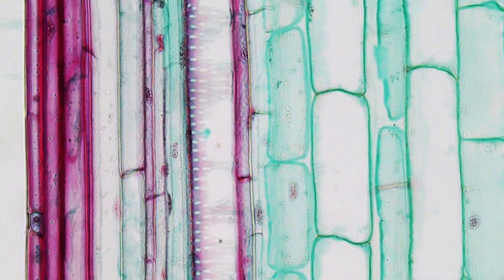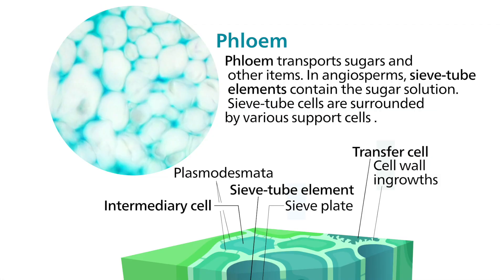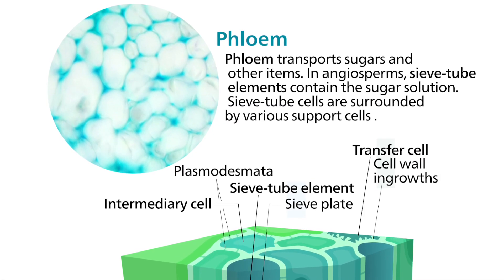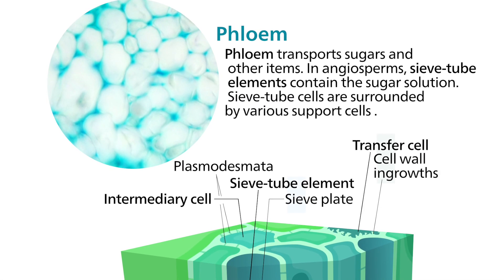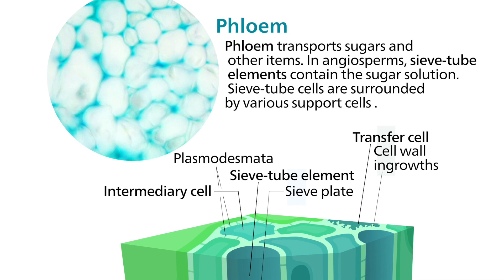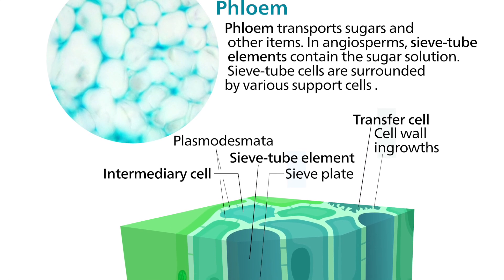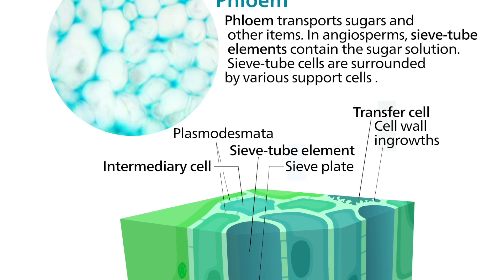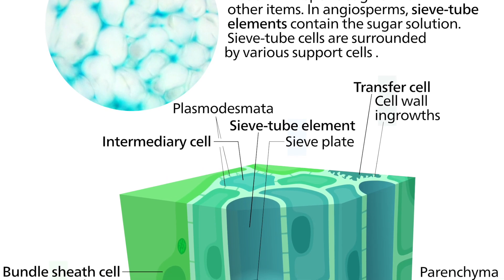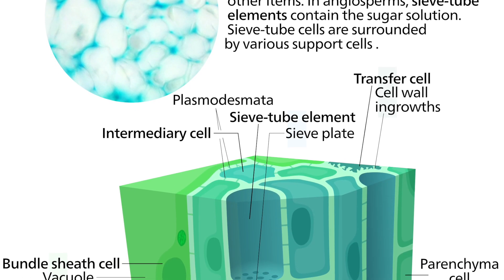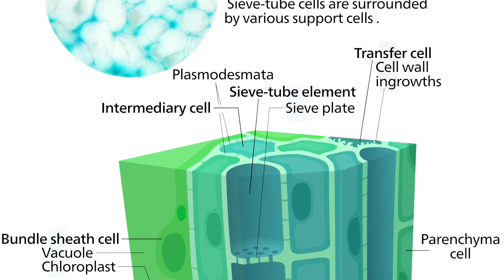The next one is phloem cells. They're similar to xylem cells because phloem is a specialized transport tissue that carries the food made from photosynthesis around the body of a plant. So instead of carrying water and mineral ions like xylem, phloem carries food. However, phloem cells don't become lignified and die.